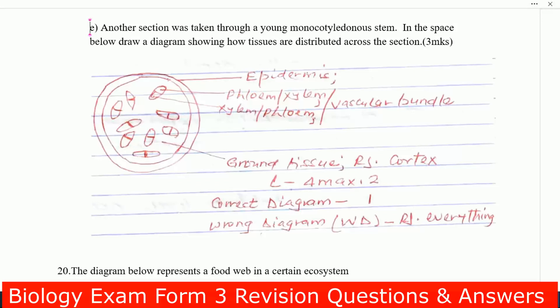Go to the next one. Another section was taken through a young monocotyledonous stem. In the space below, draw a diagram showing how tissue is distributed across the section. So this is how you will see it in monocotyledonous. That one is epidermis, that is phloem or xylem, and that is how it is distributed.